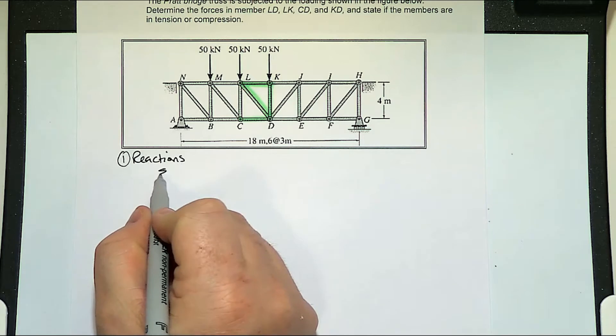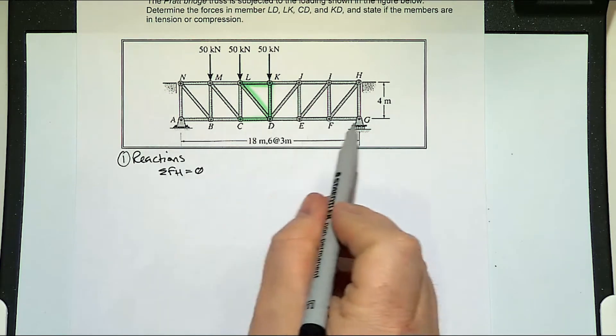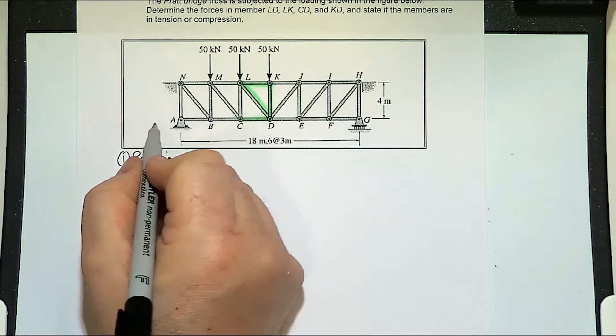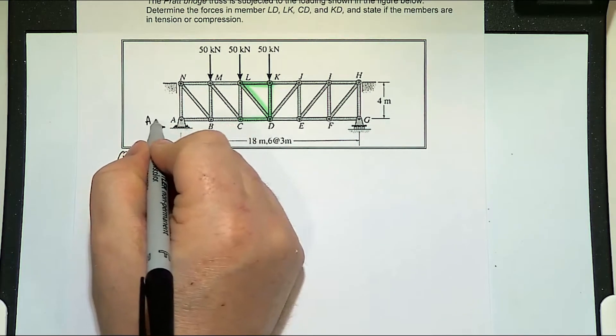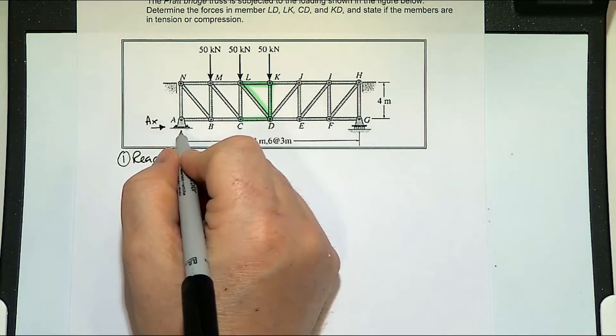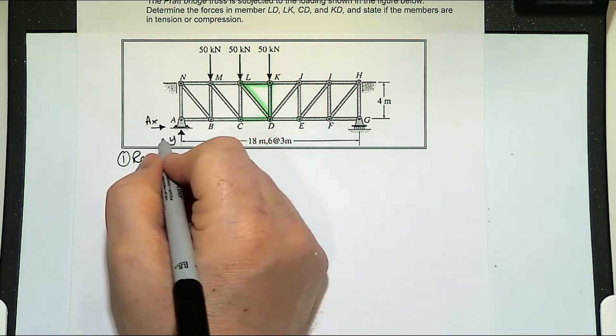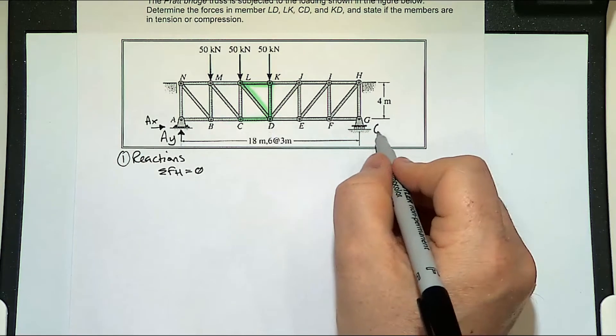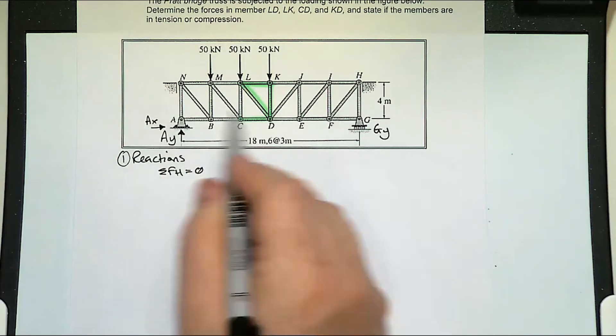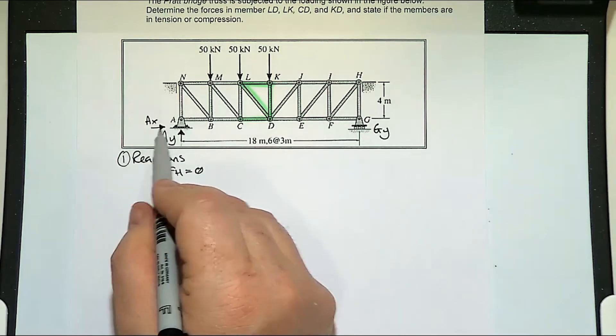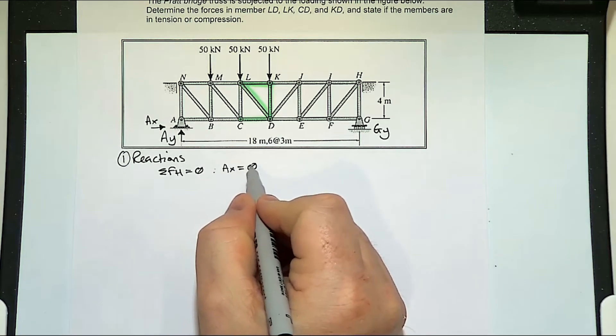If we looked at the sum of forces horizontally, we've got this A. There's no horizontal forces other than this reaction. So our A_x equals zero.